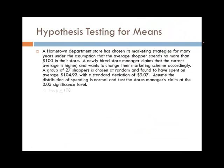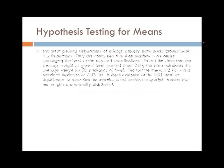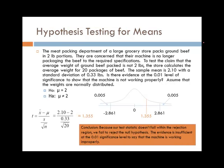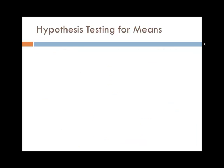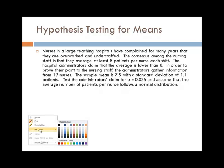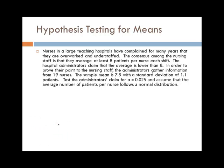I'm going to skip that one. I'm going to skip that one as well. Nurses in large teaching hospitals complain for many years that they are overworked and understaffed. The consensus among the nursing staff is that they average at least 8 patients per nurse each shift. They average at least 8. So that's the status quo. That's the null. The alternative would be that it's less than 8. In order to prove their point, the administrators gather information from 19 nurses.